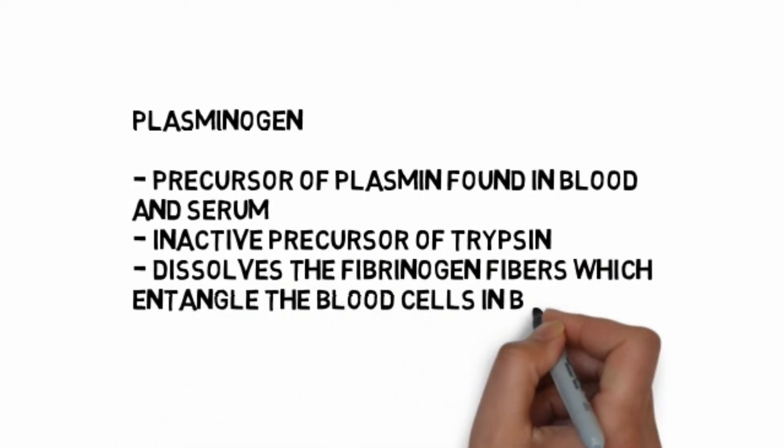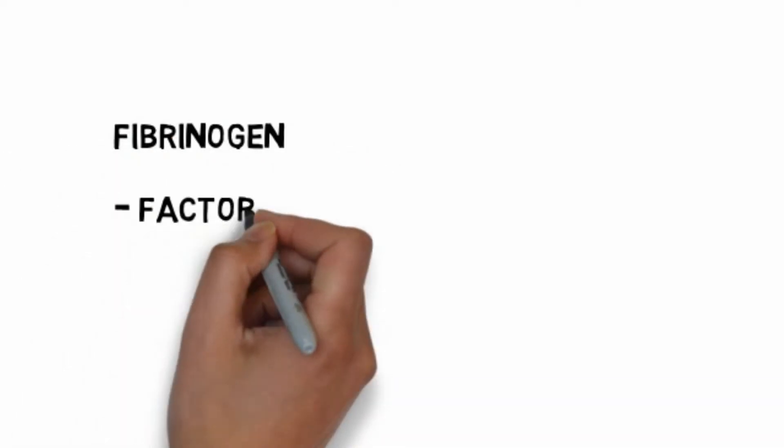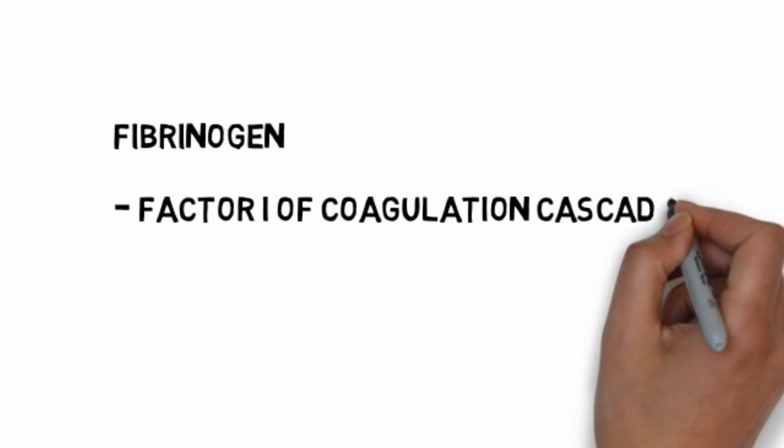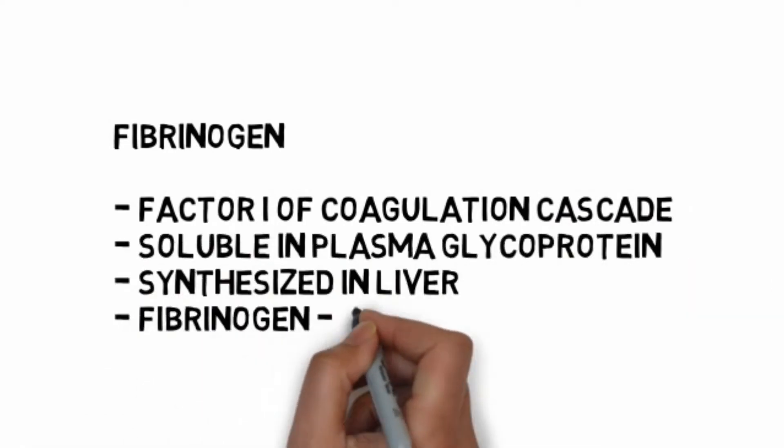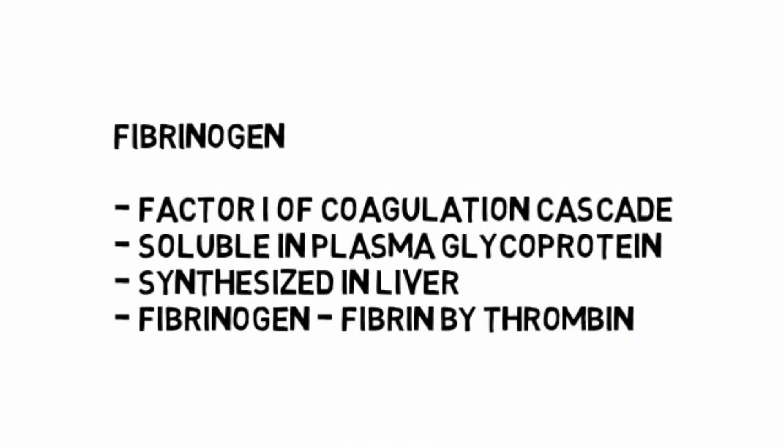Gamma globulins include immunoglobulins. Fibrinogen, factor one of coagulation cascade, is soluble in plasma. It's a glycoprotein synthesized in liver. Fibrinogen leads to fibrin by thrombin.